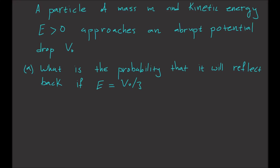A particle of mass M and kinetic energy E, which is greater than zero, approaches a sudden potential drop V0. If we plot this potential versus X, a particle coming from the left sees a drop in the potential down to minus V0.